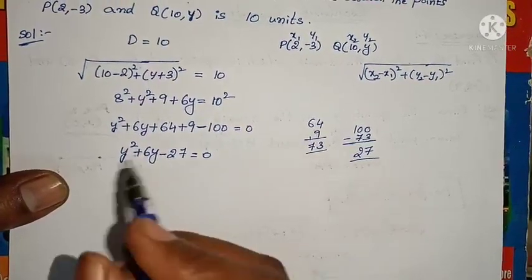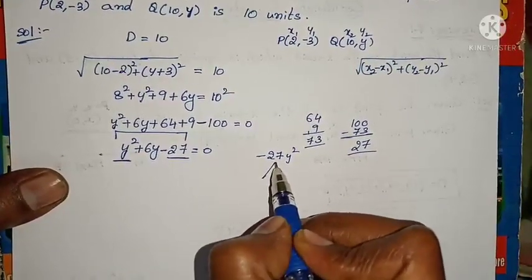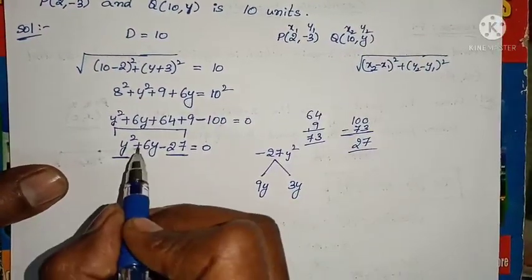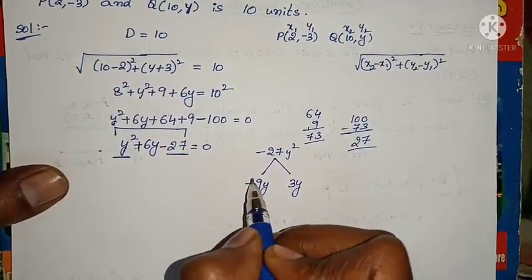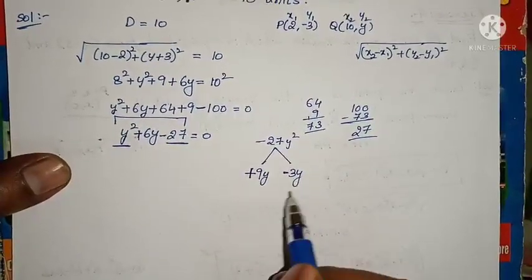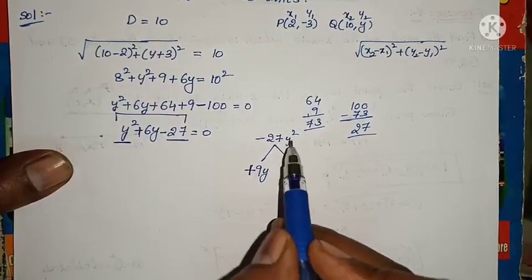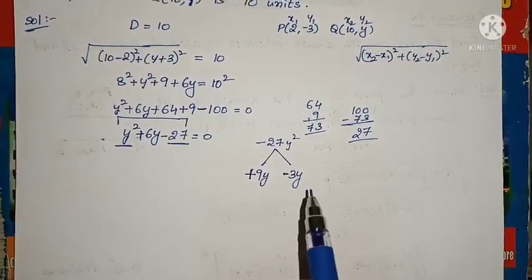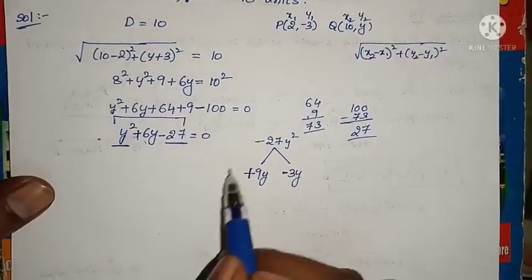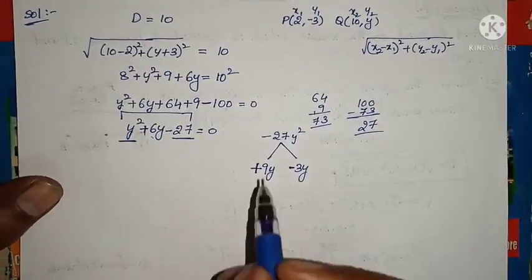We know how to solve a quadratic equation — by taking the factors. Take the first term and last term: multiply to get minus 27y squared. Take factors 9 and 3: 9 threes are 27. With y squared, take y and y. The symbol here is plus, so for the bigger number keep plus and for the next keep minus. Check: plus 9 minus 3 gives middle term plus 6y, and product is minus 27y squared — correct. So substitute 6y as plus 9y minus 3y.